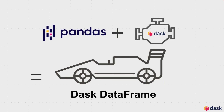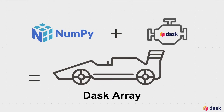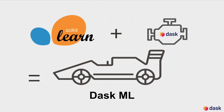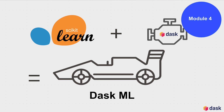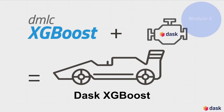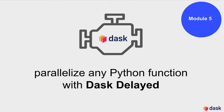The Pandas race car with the Dask engine is called Dask DataFrame. It looks and feels like Pandas, but it's no longer dealing with the scaling limitations that Pandas has — we'll cover this in Module 2. The Dask engine can also plug into the NumPy race car, giving us Dask Array, which looks and feels like NumPy but no longer has limitations on data size — covered in Module 3. Dask also plugs into scikit-learn algorithms to give us Dask ML, with no more limitations on data size — covered in Module 4, which will also cover the Dask and XGBoost integration. Finally, in Module 5, we'll look at using the bare bones of the Dask parallel computing engine to parallelize any Python function with Dask Delayed.